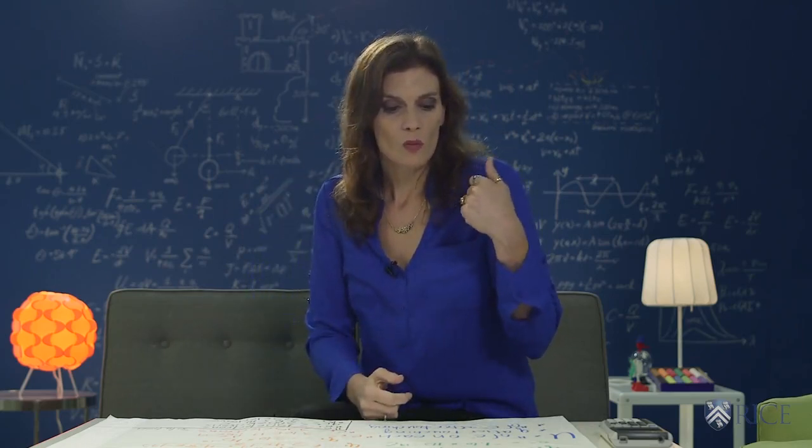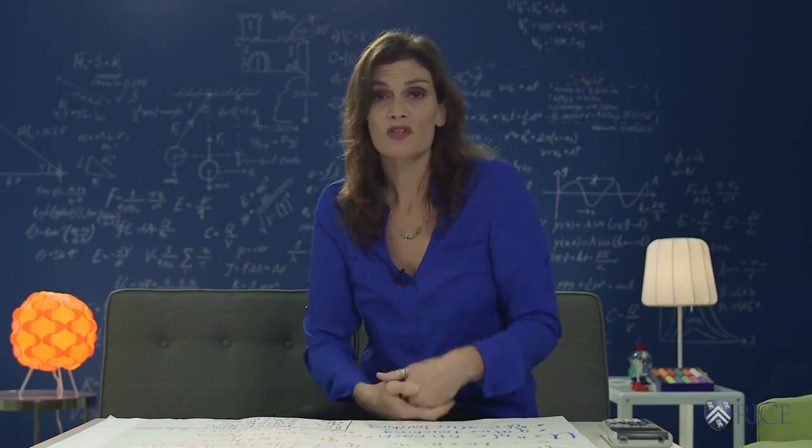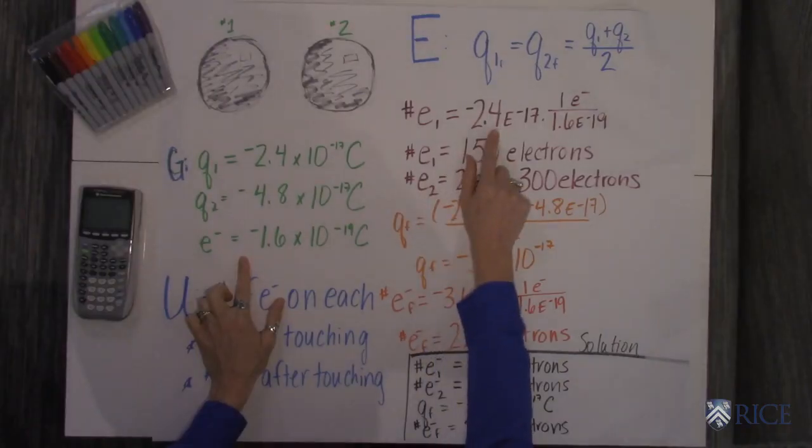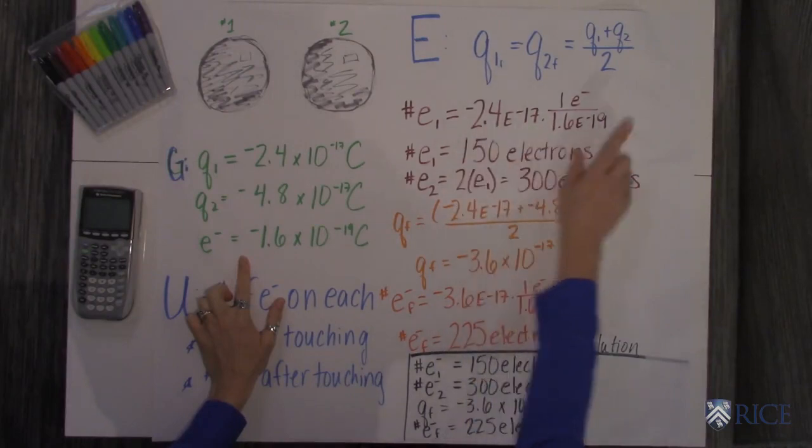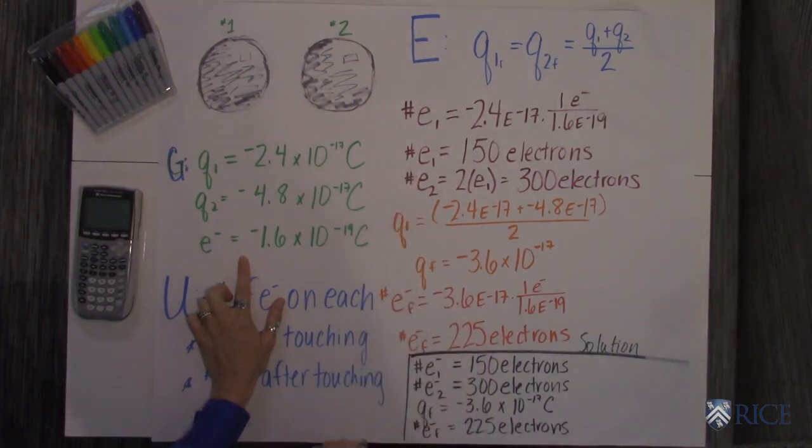When you're finding the number of electrons on each sphere, you use this as a conversion factor. You've got 2.4 times 10 to the negative 17th coulombs, and you know that one electron has 1.6 times 10 to the negative 19th coulombs. So the number of electrons on sphere number one is 150.